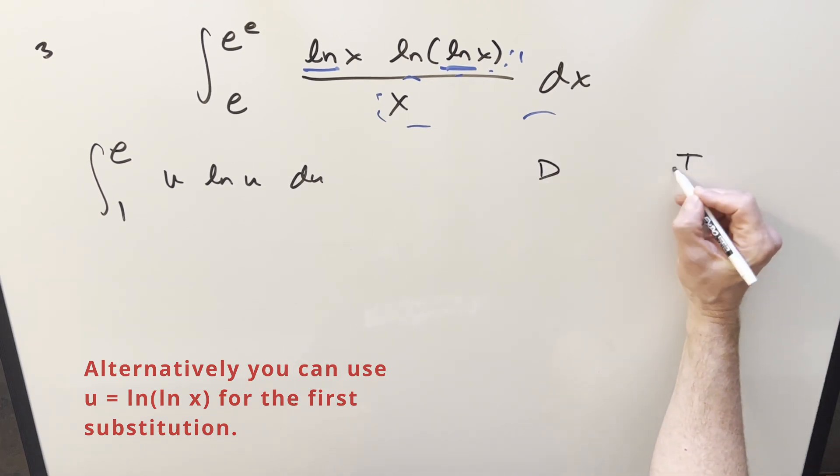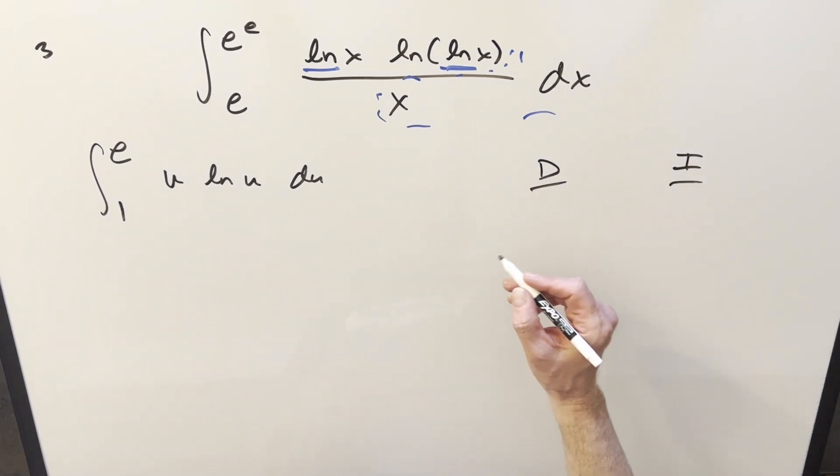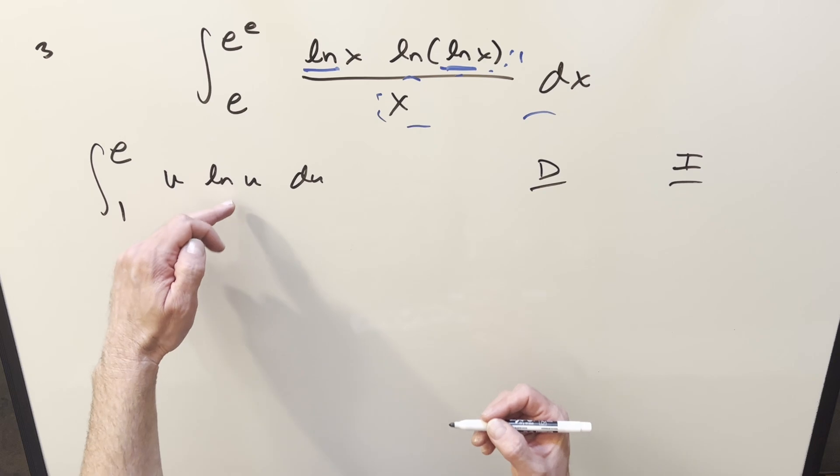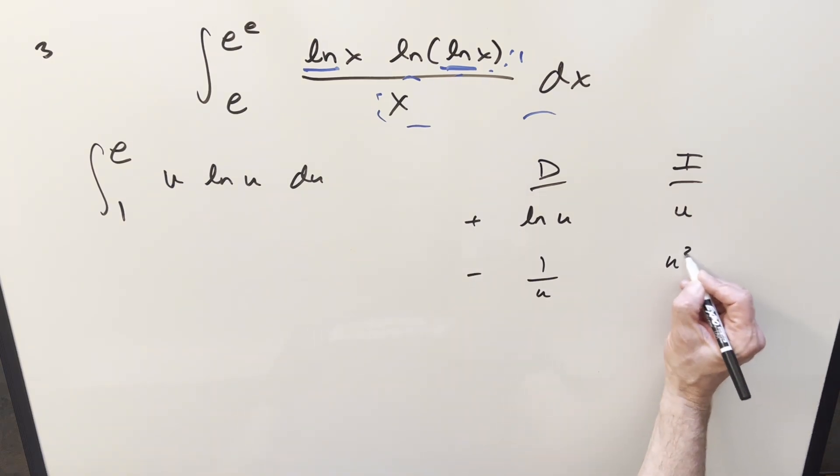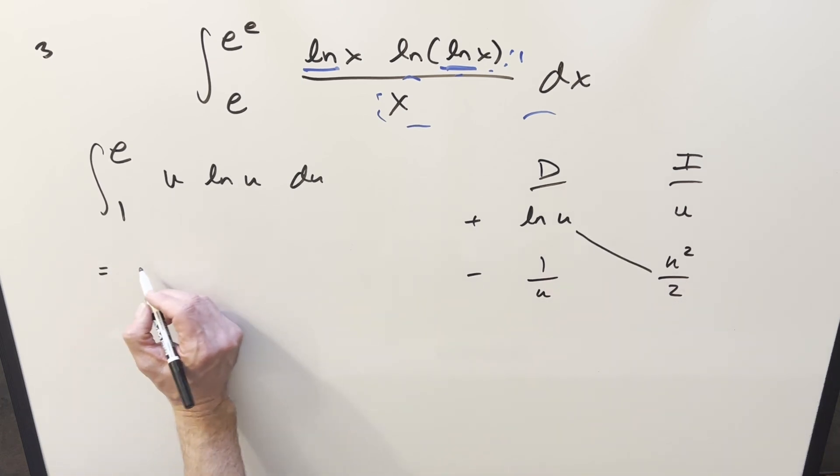We'll do the DI method over here. And what I'll do, you know, we don't really know how to integrate ln u without integration by parts. So we'll differentiate ln u and we'll integrate u. So then go ahead and differentiate here. We get just 1 over u. Integrate here, we get u² over 2.